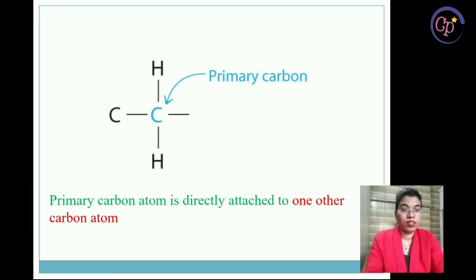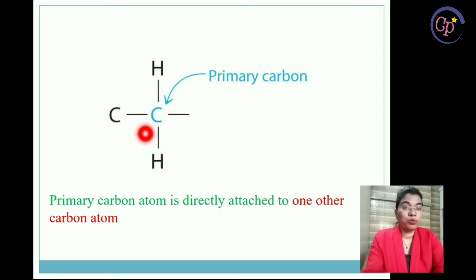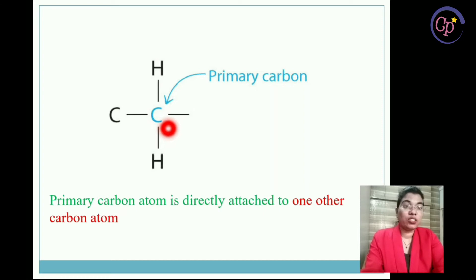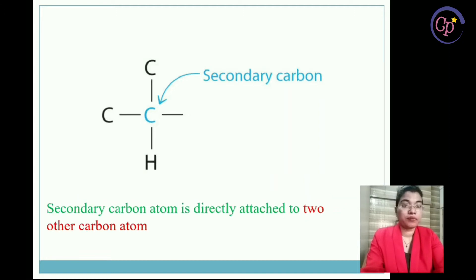So whenever a compound is given and you need to find out the degree of any carbon atom, you only need to check how many carbon atoms it is directly attached to. Here I have taken a structure. The central carbon atom, which is blue in color, is attached to one other carbon atom, so it is showing one degree — it is a primary carbon atom.